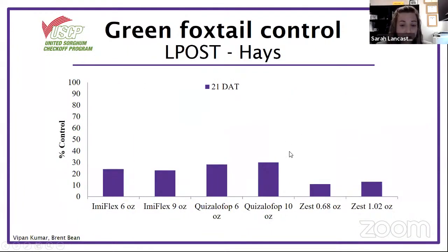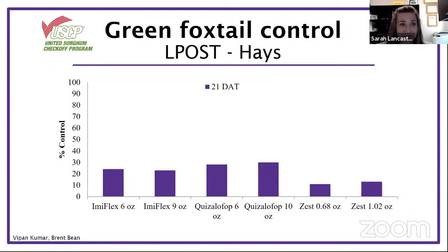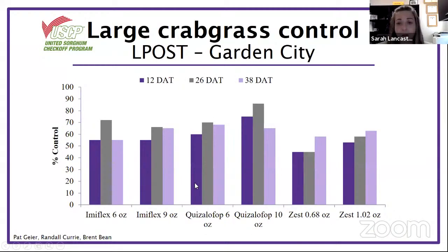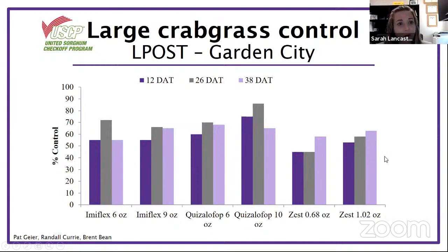Timeliness matters for grasses too. There's a reason companies put those height restrictions on the labels — that's where they feel comfortable standing behind their product. None of these products did very well on green foxtail when applied late — late meaning around 12-inch foxtail. At Garden City, the late post application shows a little separation with the high rate of quizalofop having better control than other treatments, but generally poorer control across all late applications.